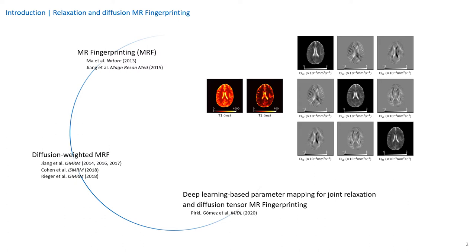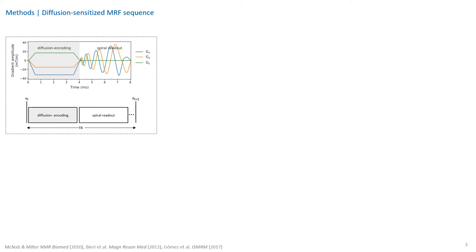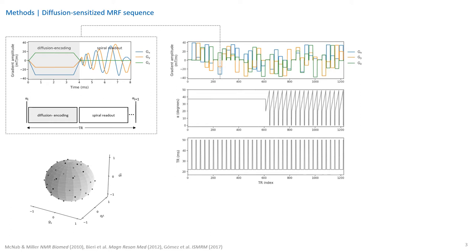In the next slides, I'll introduce our sequence design and the deep learning approach, and present results for healthy subjects and multiple sclerosis patients. Our sequence design builds on the 2D-Fist MRF scheme, which we sensitize to diffusion by inserting monopolar diffusion encoding gradients along all three axes before the spiral readout, similar to diffusion-weighted SSFP techniques. To encode the full diffusion tensor, we acquire 30 diffusion directions along the signal train.